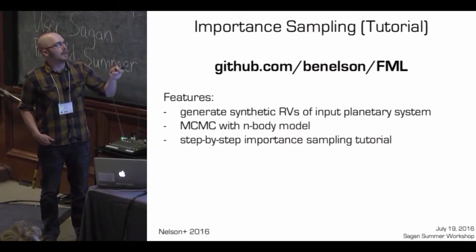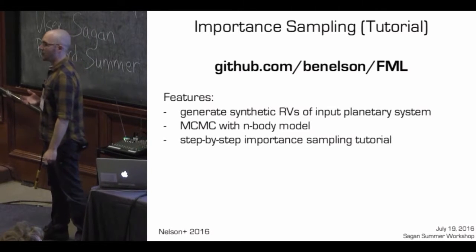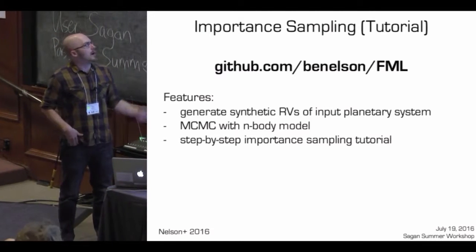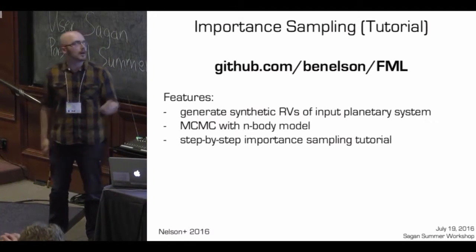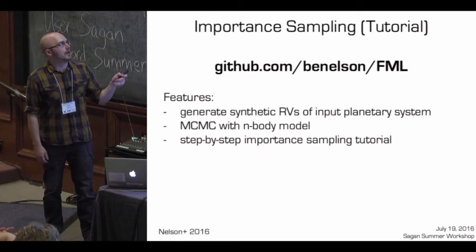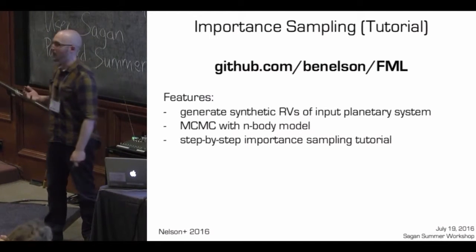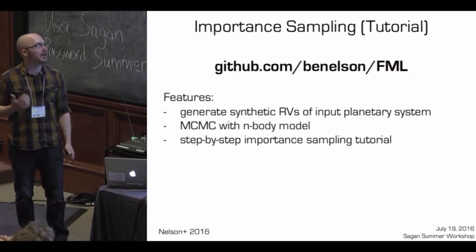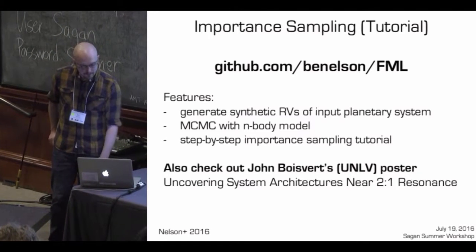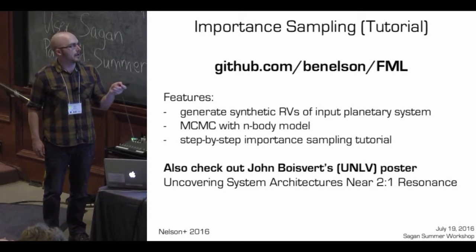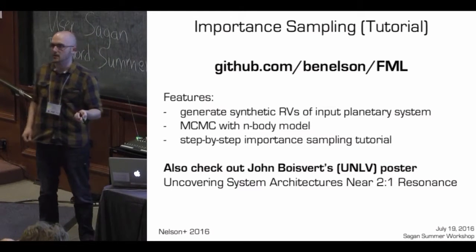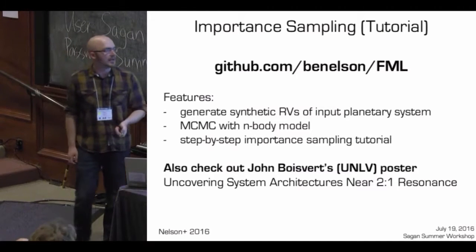The code is up on GitHub. If you want to try importance sampling for your own problem — whether radial velocity or something else — it's available there. Features include an IPython notebook for generating synthetic radial velocities from an arbitrary input system, an MCMC incorporating an N-body model to handle planetary system interactions, and a step-by-step tutorial on the whole importance sampling algorithm. Also check out John Bovere's poster — we're applying this algorithm to several dozen radial velocity systems to uncover new companions.